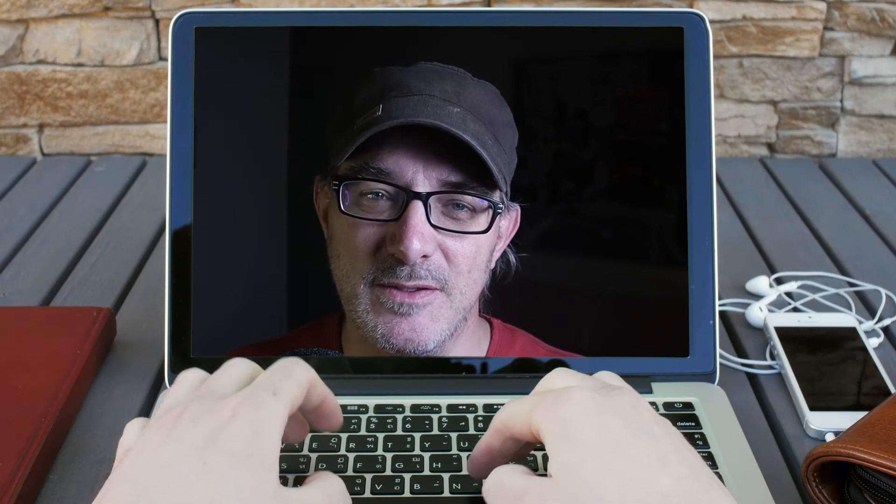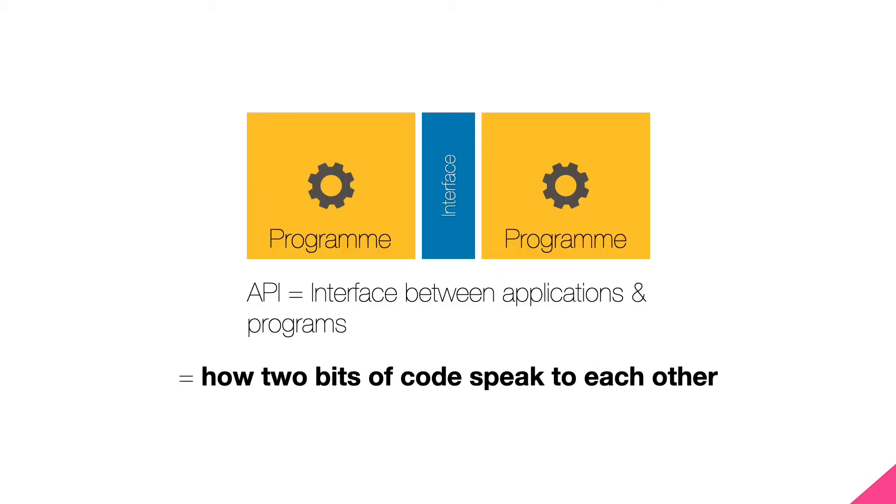In the case of the API, the two entities that interact are pieces of code. We speak of a software library's API when referring to the list of public functions it provides. This includes their signature — that is to say, the type of parameters that these functions accept and what they return.